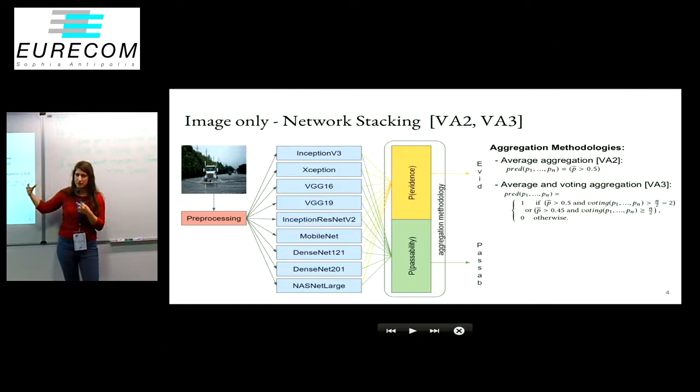And then we did average aggregation. So we take the average of the softmax from all the different networks, and we use a 0.5 threshold to classify them. And we tried a second approach for the aggregation, which was combining the average of the softmax together with the majority voting.